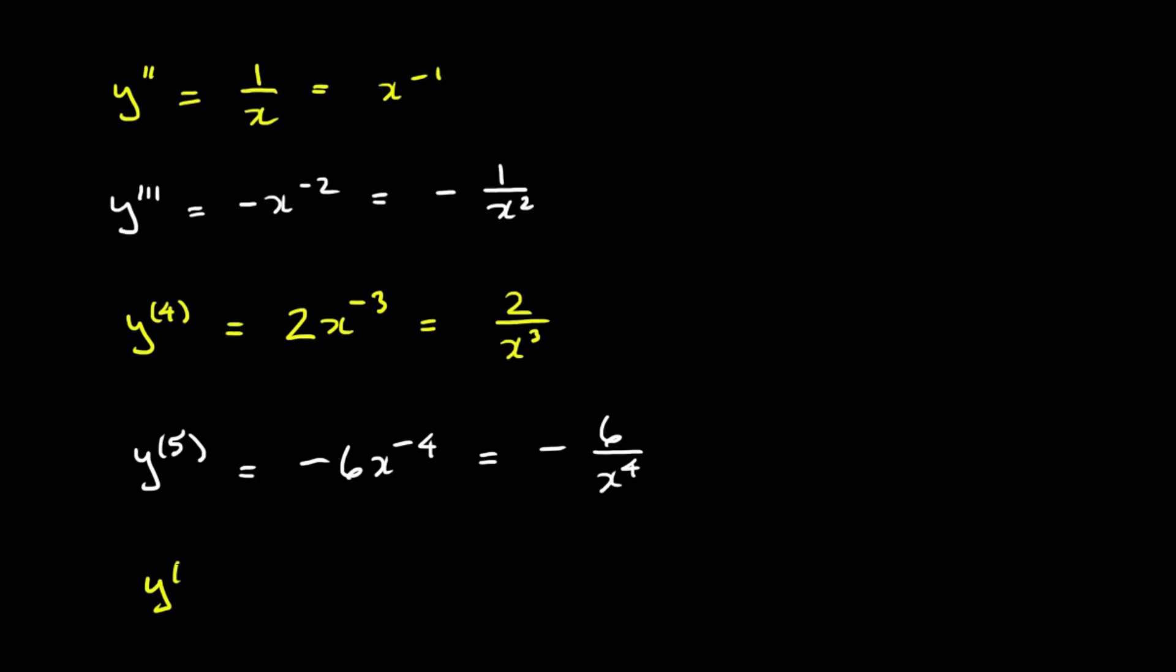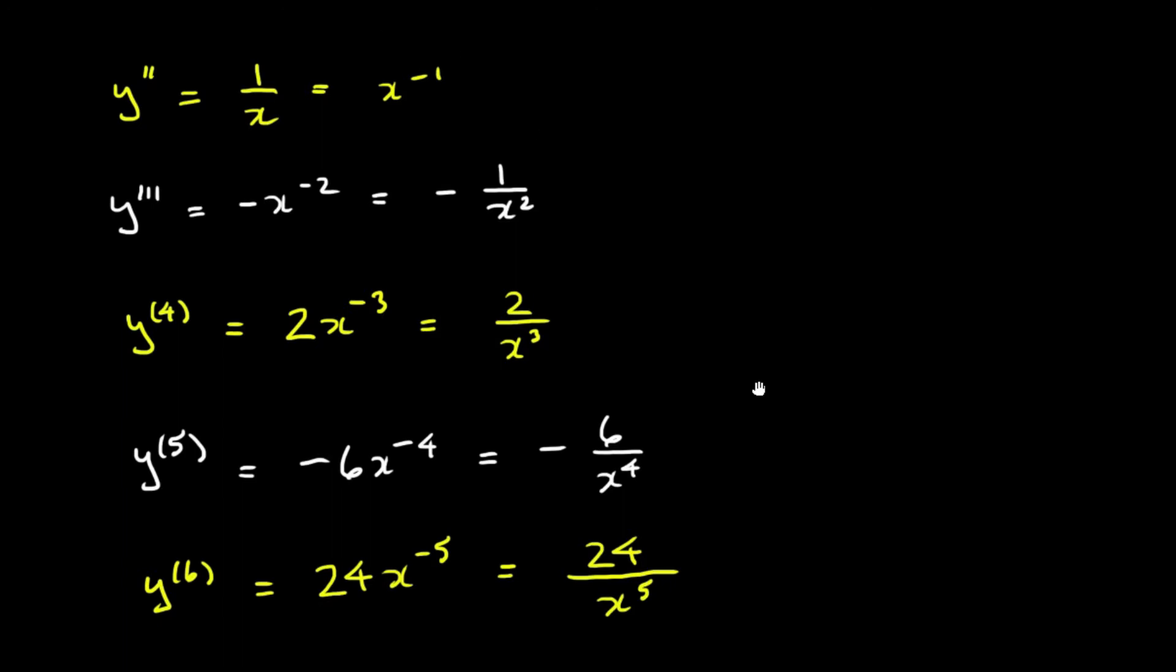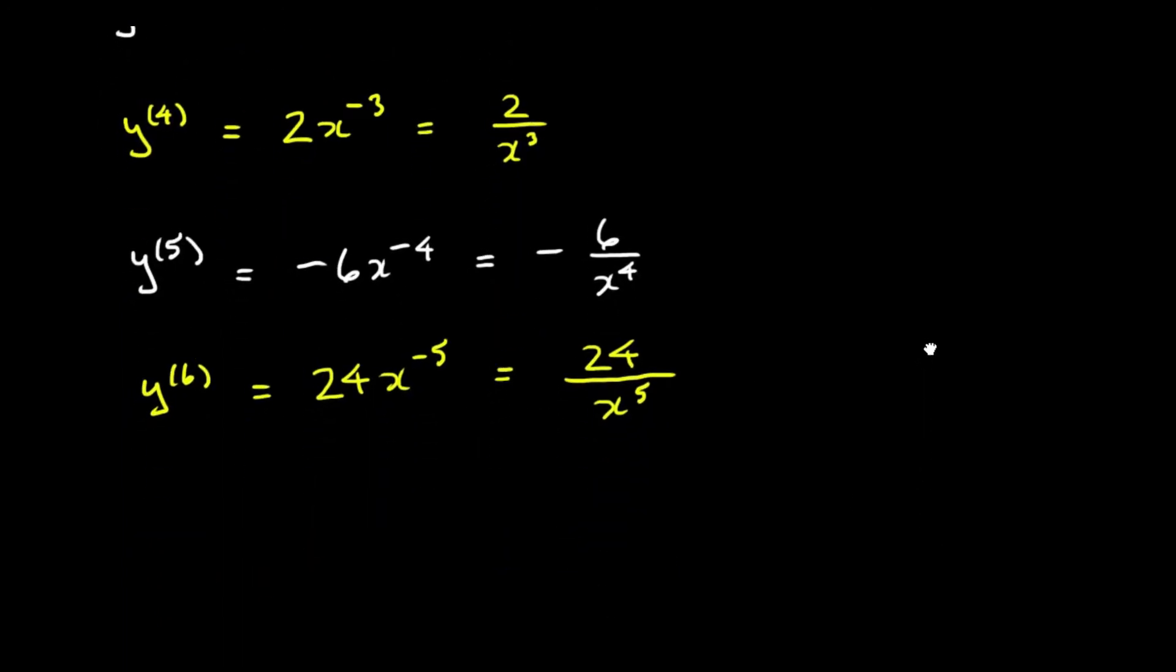This is our sixth derivative. And if we differentiate the fifth we'll get a positive 24. There we go. It's 4 factorial. Multiply by x to the negative 5. And then I think we've got most of our pattern under control here. So let's see what we can piece together. So we see a factorial. Now keep in mind this is 4 factorial. So I probably should write that down. This is the same thing as 4 factorial on the top all over x to the power 5.